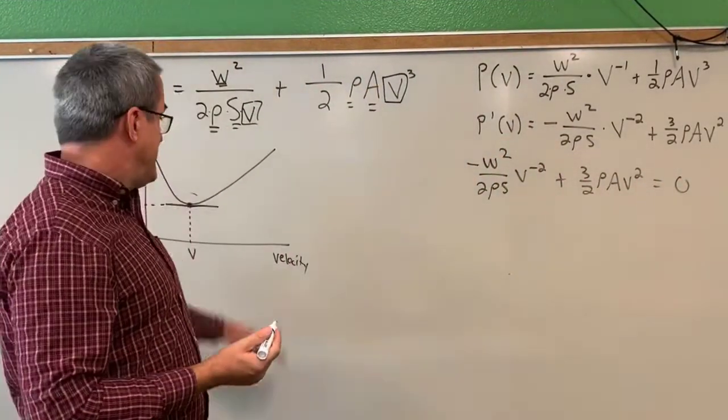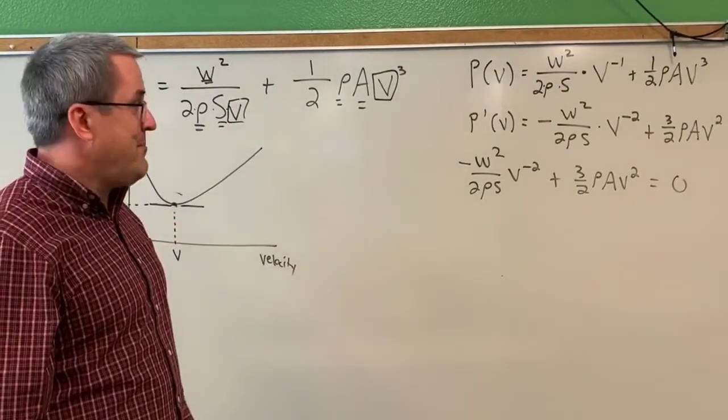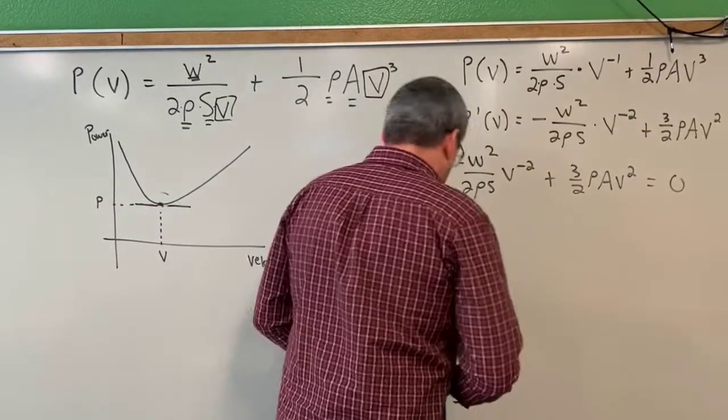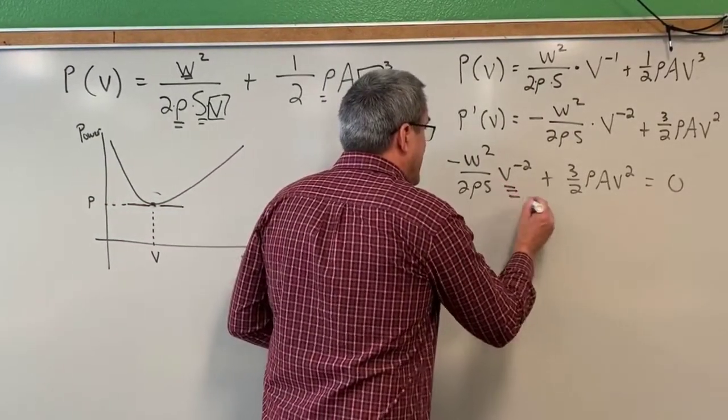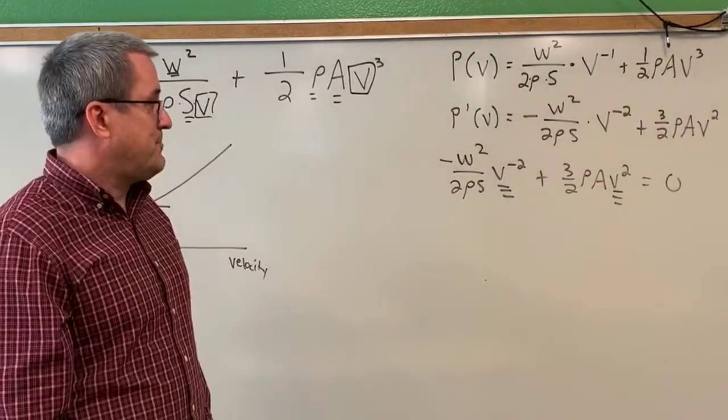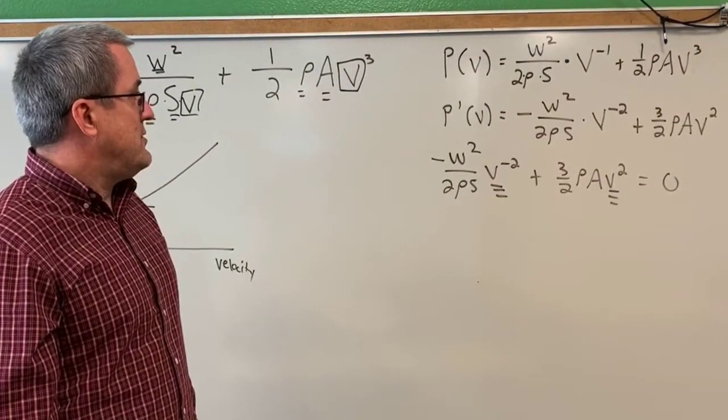Because when the derivative is 0, we know we're at an optimum, either a minimum or a maximum. In this case, it will be a minimum. Let's find out where that happens. And when I say, let's find out where that happens, what is the value of V such that that minimum will occur? So we do some algebra and we find out where is the derivative equal to 0? So let's work on it.